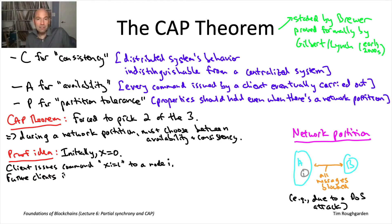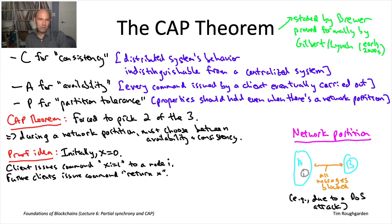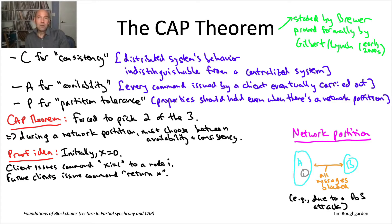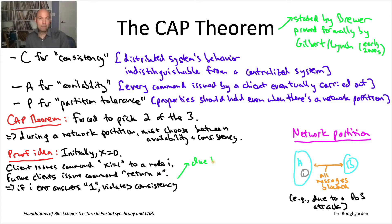Imagine the distributed system is keeping track of some variable X — maybe X represents the number of times the San Diego Padres have won the World Series, so currently X equals zero. Now imagine one of these years the Padres do win the World Series, and a fan very excitedly wants to update the database to reflect that. A client issues a command saying set X equal to one, and this command gets routed to a node in the bigger set A. We'll call that node I.